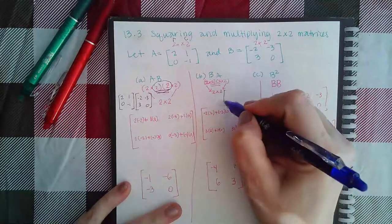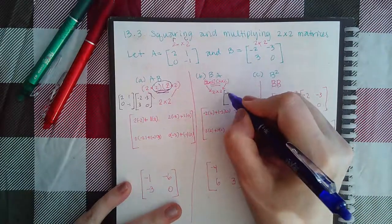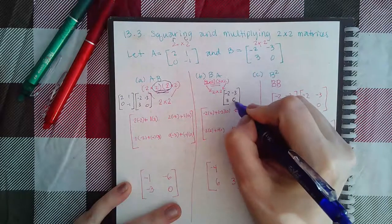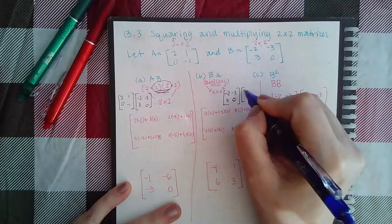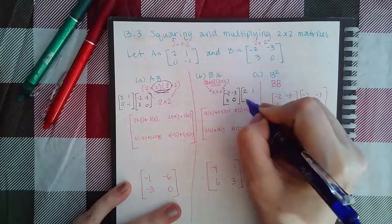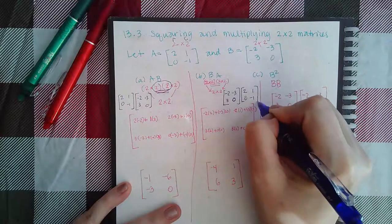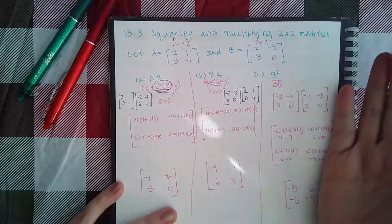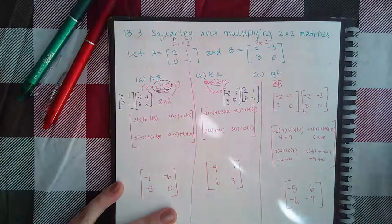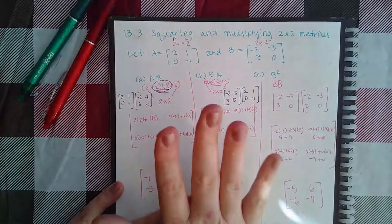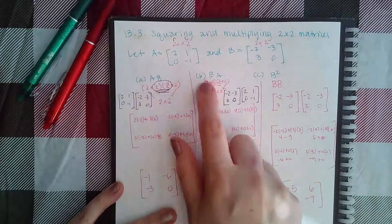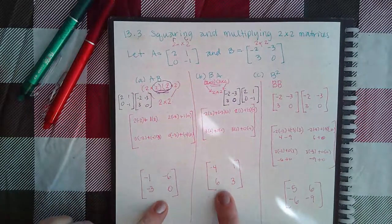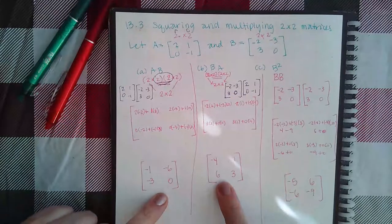Matrix multiplication is not commutative. That means if you switch the order of the matrices, you will not necessarily get the same result. It can sometimes happen, but normally when you switch the order you get a different result, as you can see here.